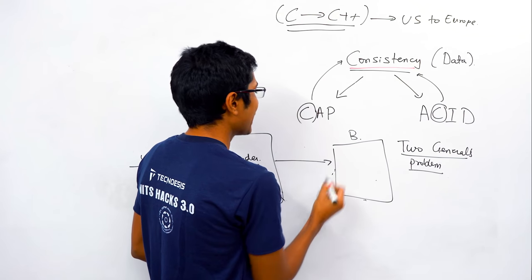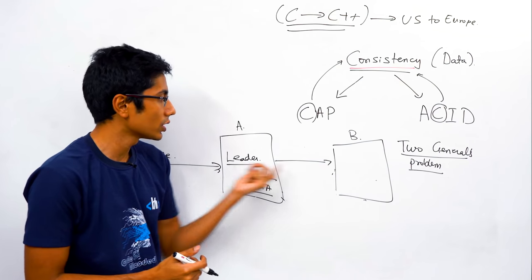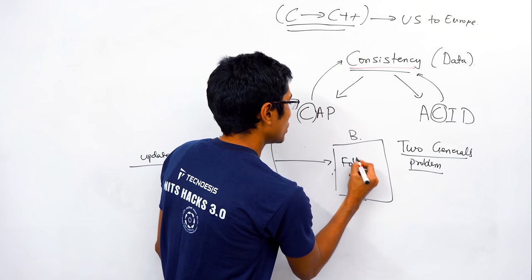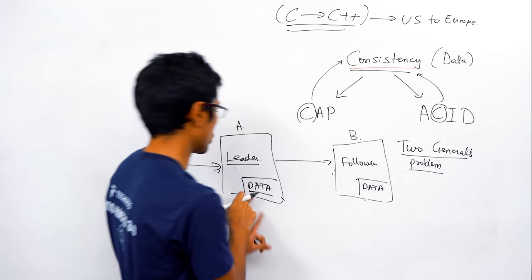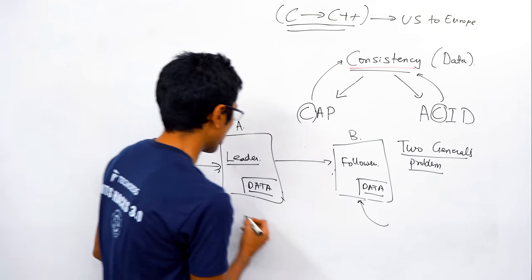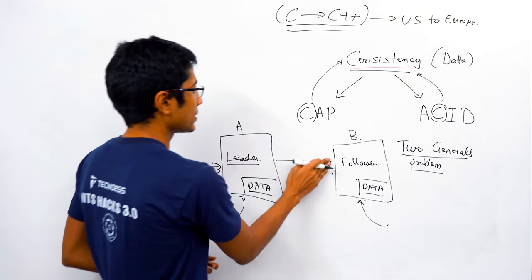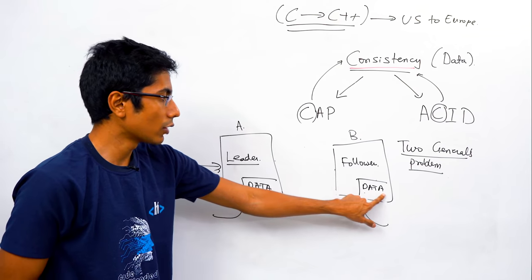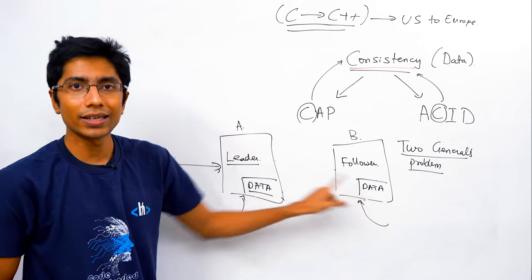The follower gets regular updates from the leader, since the leader is the only place where information can be written. The follower is where you can read information from. Assuming the replication goes through, both read operations should give you the same consistent data.